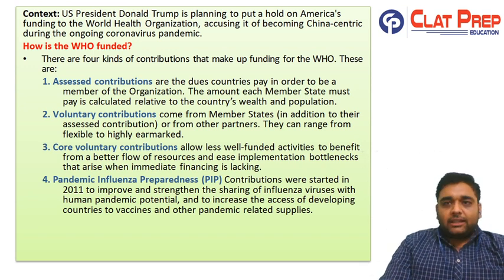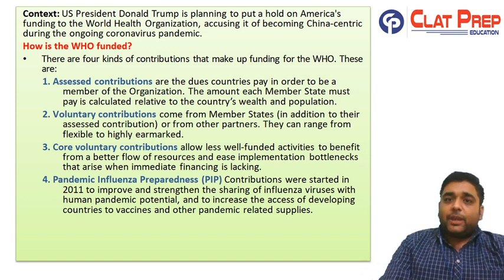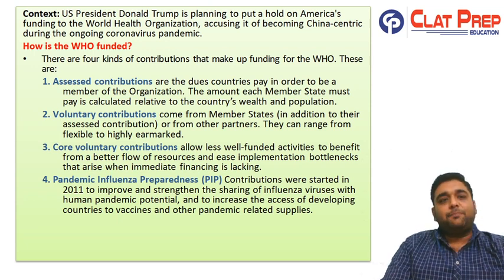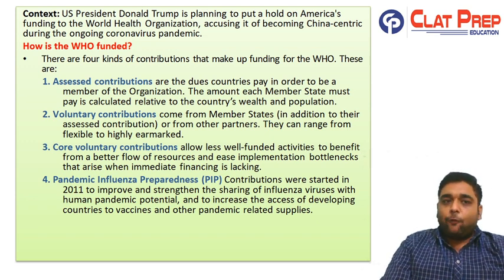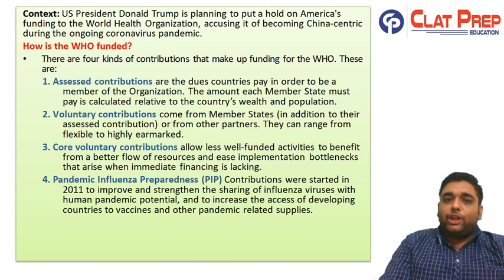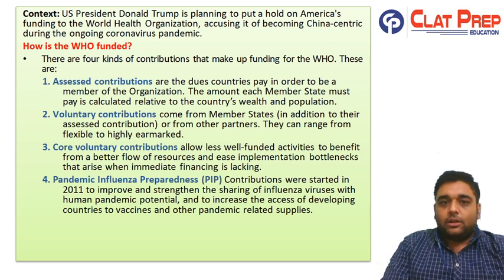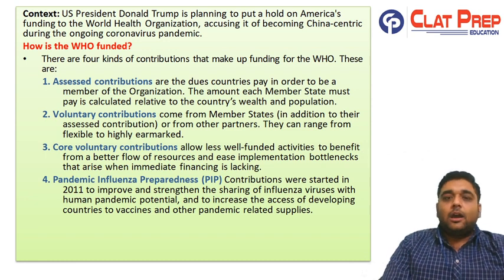Next, we will talk about WHO's funding. US President Donald Trump is planning to put a hold on America's funding to WHO, accusing it of becoming China-centric during the ongoing coronavirus pandemic. There are four kinds of contributions that make up funding for WHO. The first is assessed contributions — the dues countries pay to be a member. The amount each member state must pay is calculated relative to the country's wealth and its population.